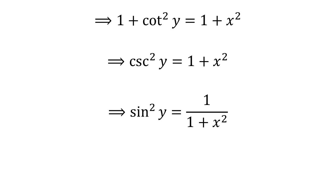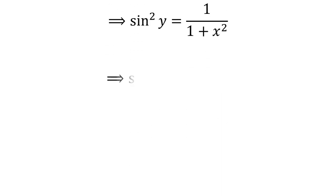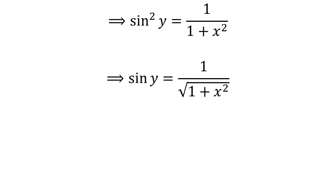The reciprocal of cosecant squared of y is equal to sine squared of y. So, taking the reciprocal of both sides, we get sine squared of y is equal to 1 divided by 1 plus x squared. Taking the square root of both sides gives us sine of y is equal to 1 divided by the square root of 1 plus x squared.